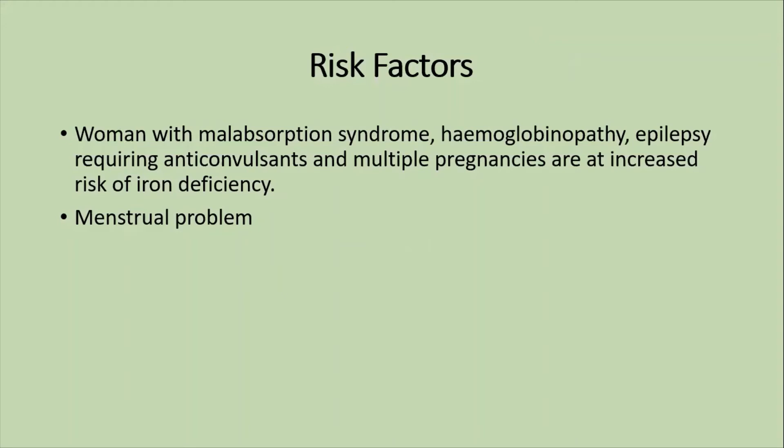Risk factors for megaloblastic anemia include malabsorption syndrome, hemoglobinopathy, epileptic women on anticonvulsant drugs, multiple pregnancies, and patients with menstrual problems such as polymenorrhea — all of which carry a risk of anemia.